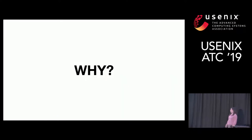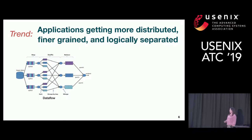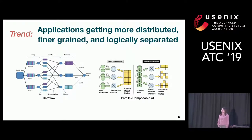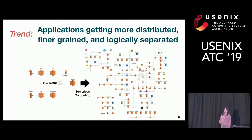The natural question is, why should we do something like this? If you look at applications running in data centers, they are essentially already distributed and functionally disaggregated. Workloads like data analytics and machine learning are running in a distributed way. Functions in these applications are also becoming more fine-grained with trends like serverless computing and microservices.